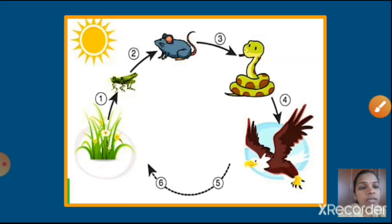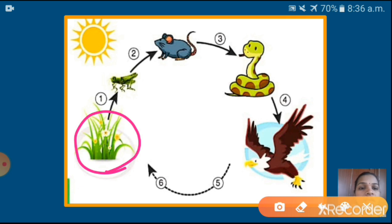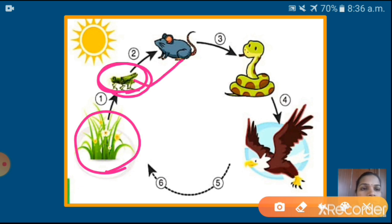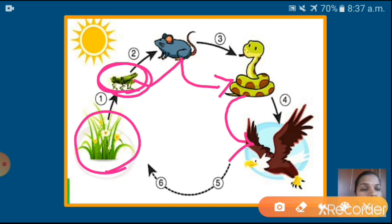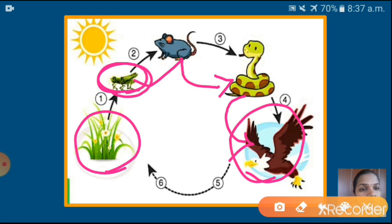Here I have given one example. First is producers — that means plants. Who will eat this plant? Grasshopper. Grasshopper gets energy from producers, and this grasshopper is eaten by mice. Afterwards, this mice is eaten by snake. Then this snake is eaten by eagle. After the death of this eagle, microorganisms will decompose the dead body. The remaining nutrients and minerals are mixed in the soil, and again this plant takes nutrients and minerals from the soil. That's why this is a chain form — that is your food chain.